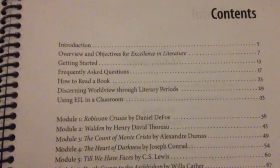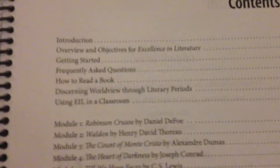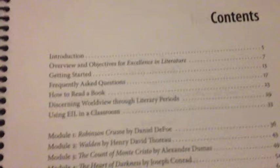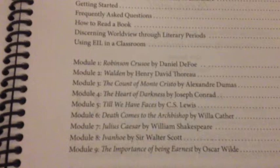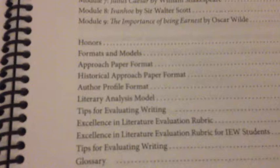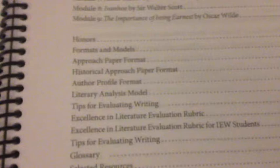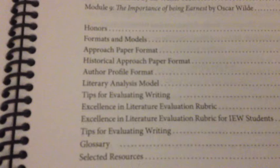So for a first look — sorry about the shakiness — you're going to see the table of contents. We include a number of helps at the beginning of the book, telling the student how to get started, answering some frequently asked questions, and then we instruct them on interesting things like how to read a book. There are nine major works to study during the year, with the option of studying an additional work in each module for an honors grade. There is also additional helpful information at the back.